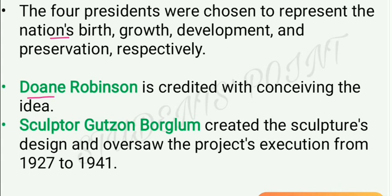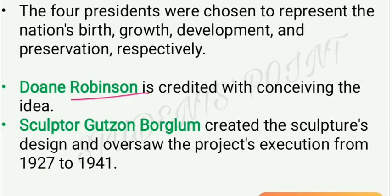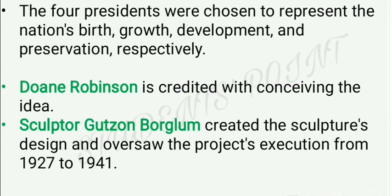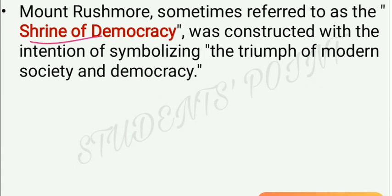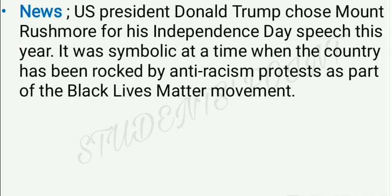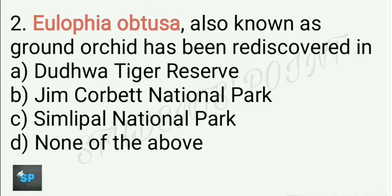Doane Robinson is credited with conceiving the idea, and sculptor Gutzon Borglum created the sculpture's design and oversaw the project's execution from 1927 to 1941. Mount Rushmore, sometimes also referred to as the Shrine of Democracy, was constructed with the intention of symbolizing the triumph of modern society and democracy. It was recently in news because President Trump chose Mount Rushmore for his Independence Day speech, symbolic at a time when the US is facing anti-racism protests as part of the Black Lives Matter movement.